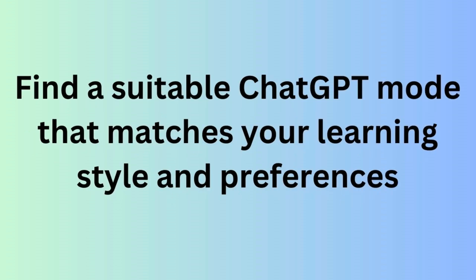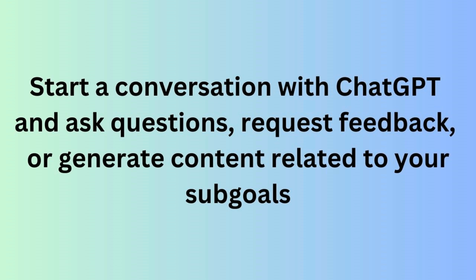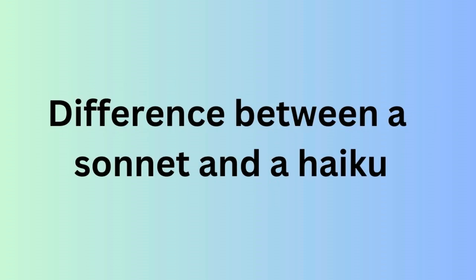Next, find a suitable ChatGPT mode that matches your learning style and preferences. For example, if you prefer a creative and playful approach, you can use the creative mode and ask ChatGPT to generate poems for you. Then start a conversation with ChatGPT and ask questions, request feedback, or generate content related to your sub-goals — for example, ask ChatGPT to explain the difference between a sonnet and a haiku.